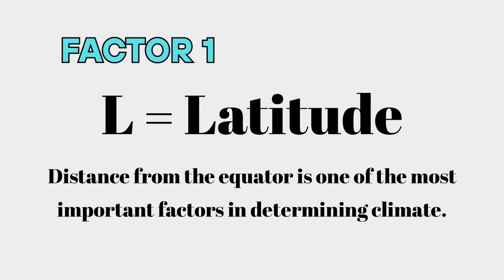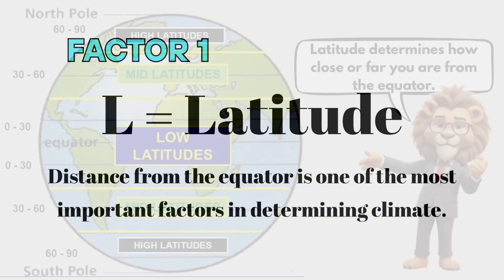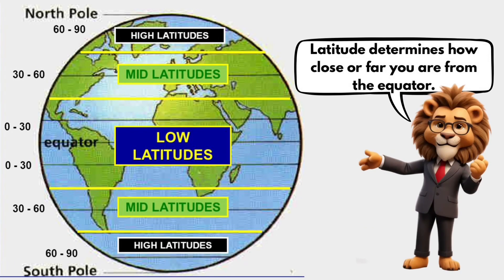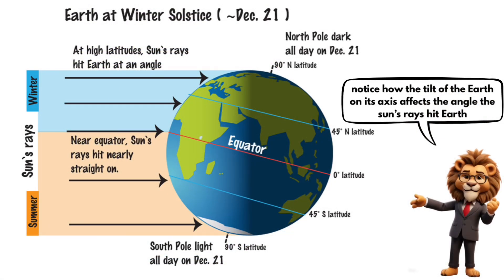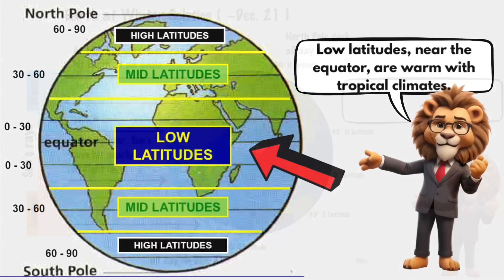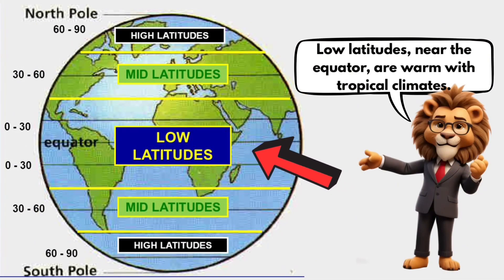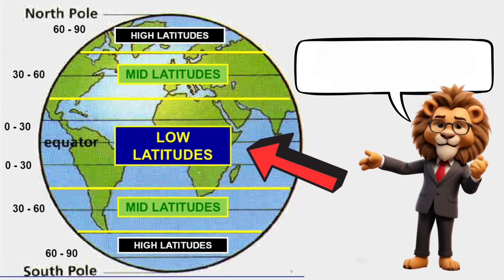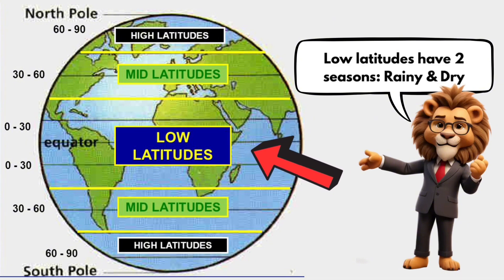Our first factor is latitude. Latitude determines how close or far you are from the equator. Notice how the tilt of the Earth on its axis affects the angle the sun's rays hit Earth. Because of this tilt, different latitudes receive different amounts of sunlight, creating zones. Low latitudes near the equator are warm with tropical climates. Low latitudes have two seasons: rainy and dry.